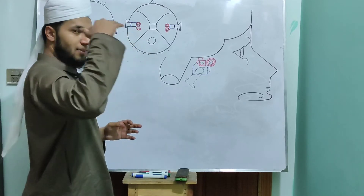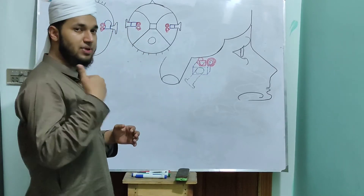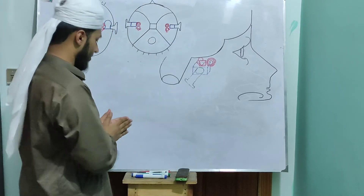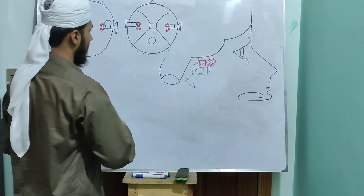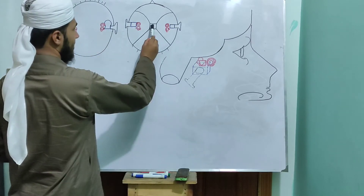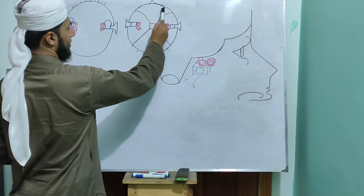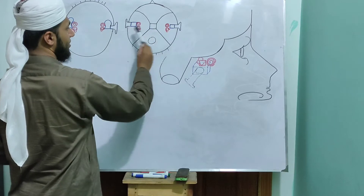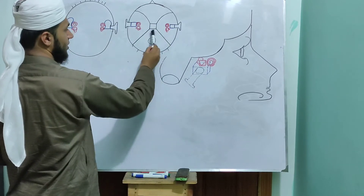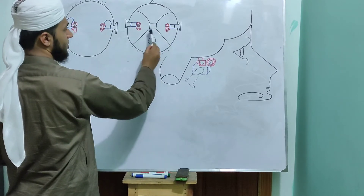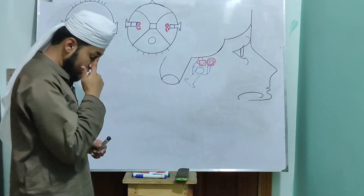We have removed the skull cap and the brain, removed down to the cranial fossae. This is the sella turcica, the anterior cranial fossa, the middle cranial fossa, and the posterior cranial fossa, and the foramen magnum.